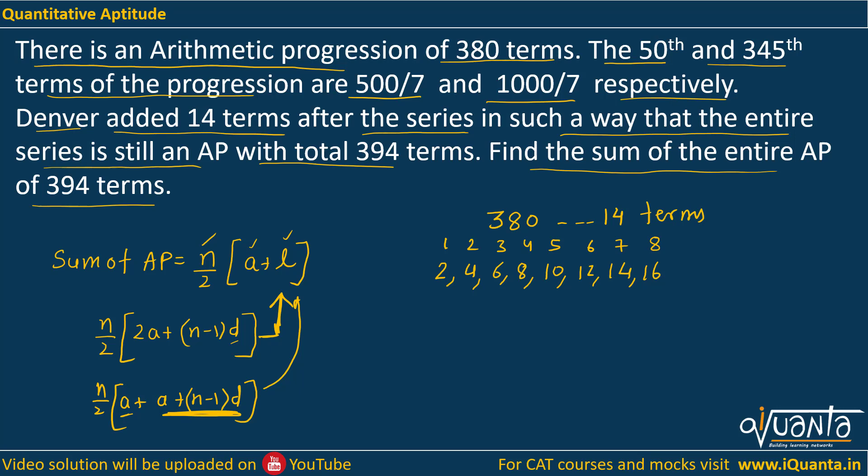So what you see here is, if you find out the sum of the first and the last term here, 2 and 16, it is 18. If you find out the sum of second and the second last term, that means second and seventh term, it is 4 plus 14, again 18. Similarly, if you do it with 6 and 12, that means third and the third last term, it is again 6 plus 12, 18.